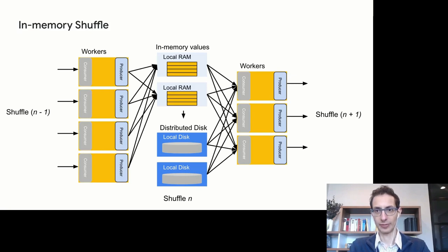Someone in chat asks: what happens when a server dies — do you need to restart like Hadoop MapReduce, or does the query continue? We use the shuffle as an intermediate persistence layer, like MapReduce or Hadoop, to recover work that needs to be restarted. And it's at the task level, so not the whole stage needs to be restarted.